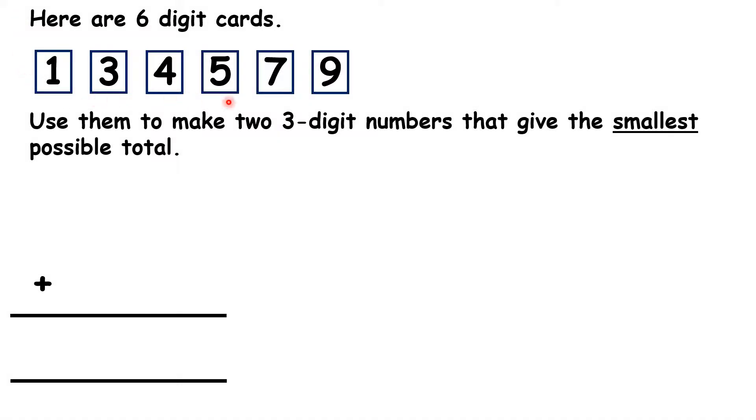Here are six digit cards. Use them to make two three digit numbers that give the smallest possible total.